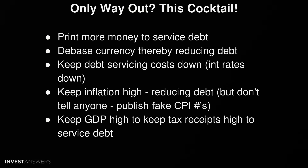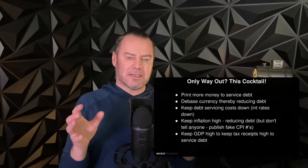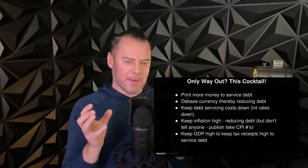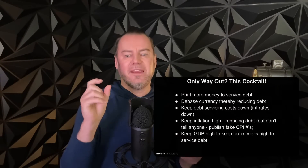What is the way out for the Fed? One: they'll probably have to print more money to service debt — it's just math. They also need to find ways to debase the currency, thereby reducing debt, and keep interest rates down to keep debt servicing costs low. They need to keep inflation high, which also reduces the debt in real terms. They'll publish some fake CPIs pretending inflation is down to 2.5% even though it's actually up 10-15%. And they need to keep GDP high to keep tax receipts high. All of this needs to be balanced carefully to engineer that soft landing.